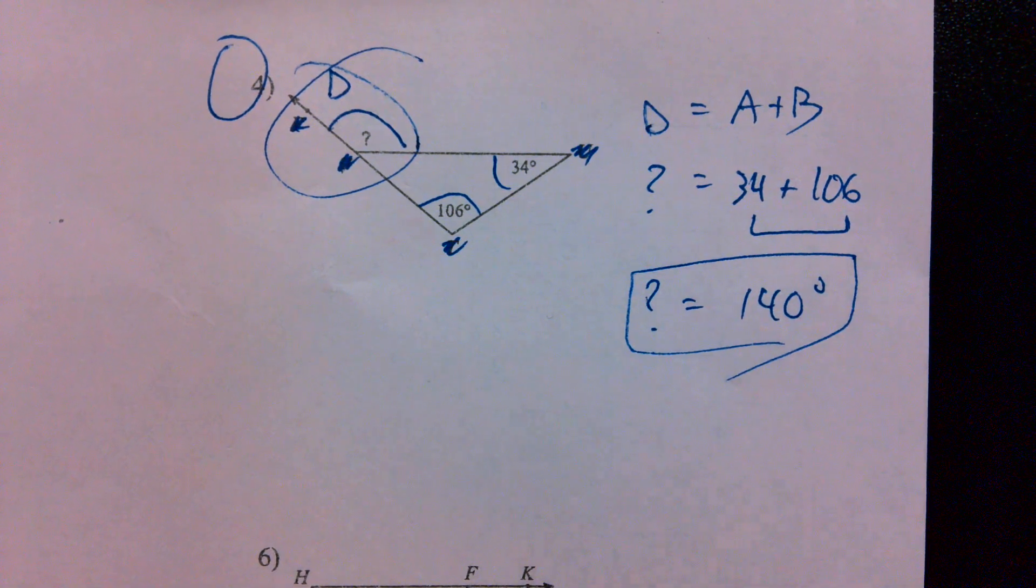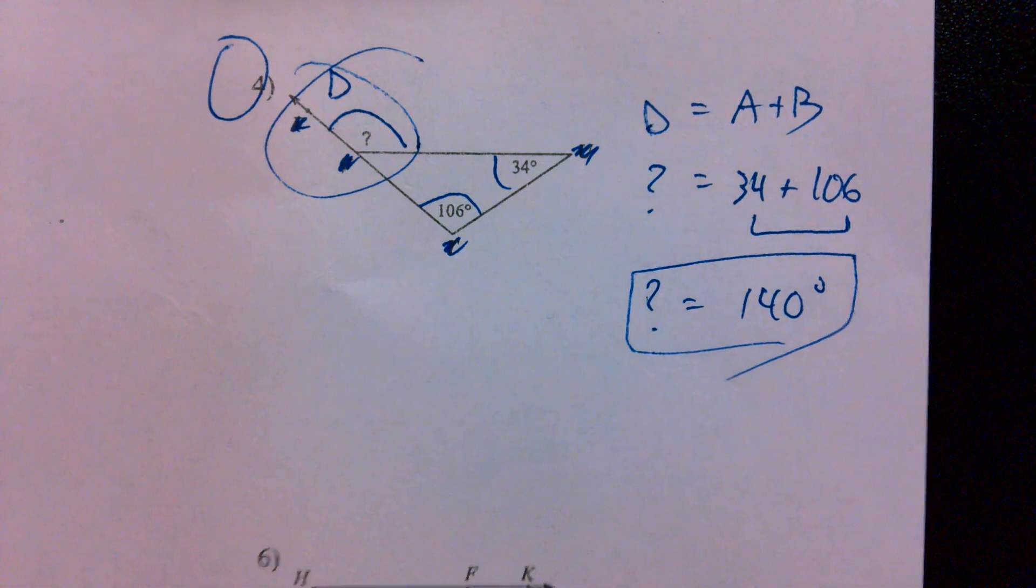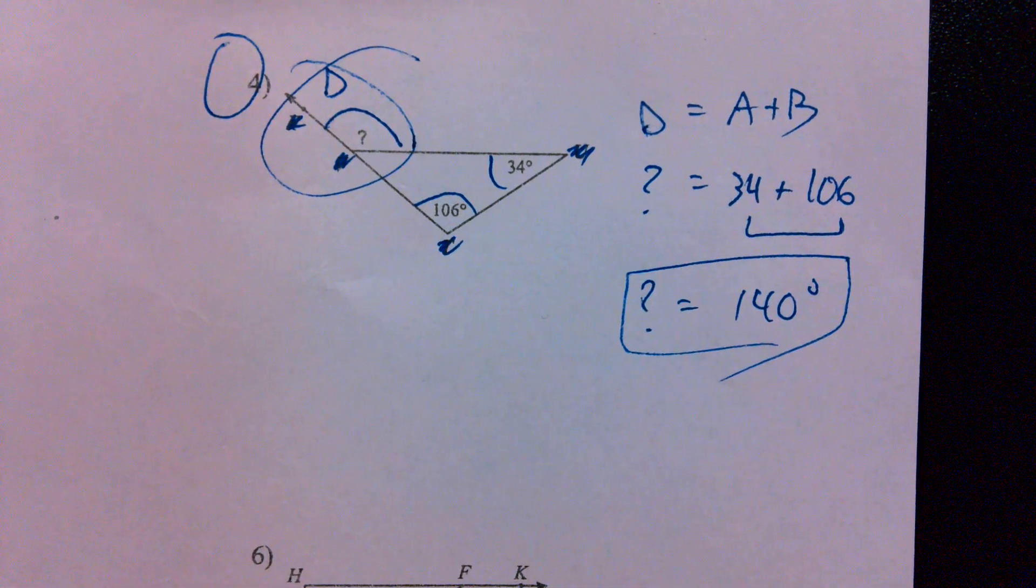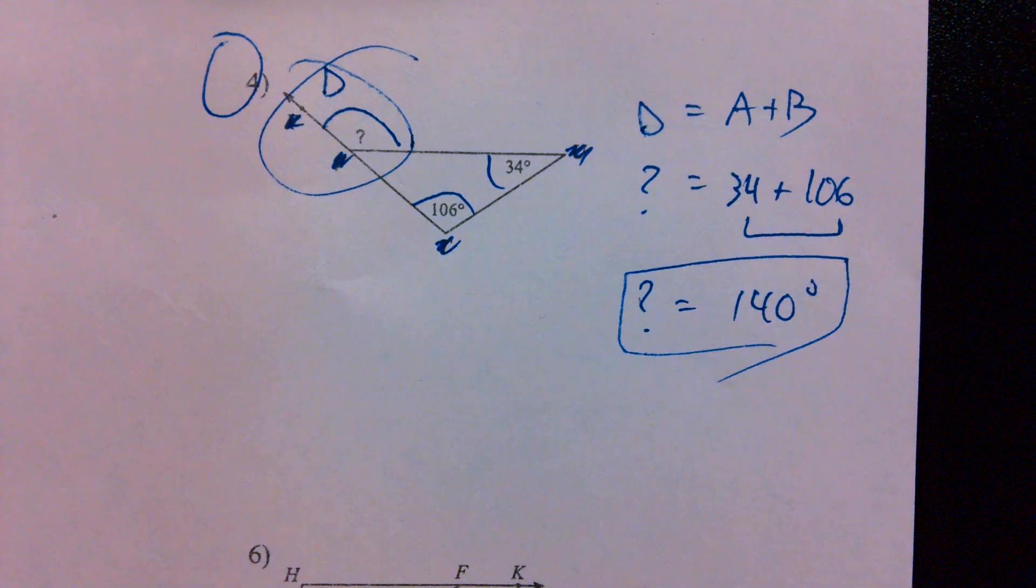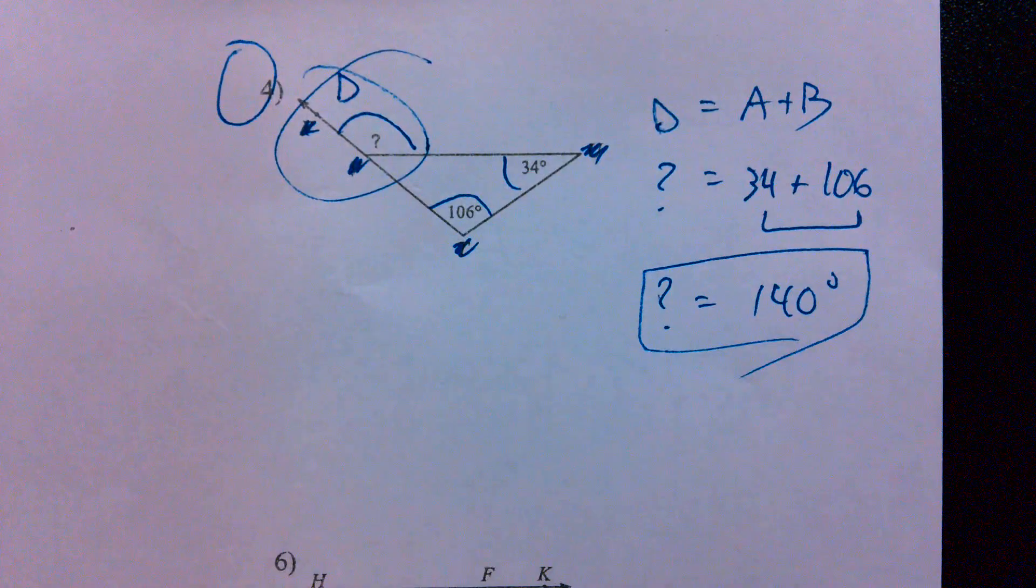It's a lot easier when it's the exterior angle we're trying to find, because we just have to add, like, the warm-up when we don't know, or when we do know the exterior angle, and we don't know one of these interior angles. That's when we have to do our little subtraction stuff.